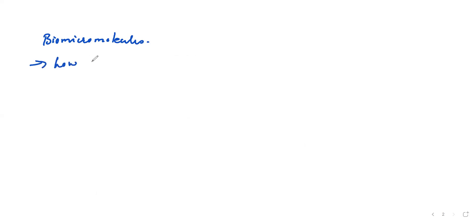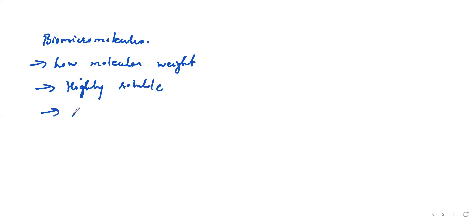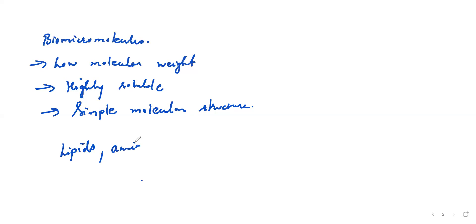In the name itself, it's micromolecules. Hence, their first characteristic will be low molecular weight. Because they are low molecular weight, they will be easily soluble — so they are highly soluble — and they will have a simple molecular structure. These particular biomicromolecules will include lipids, amino acids, nucleotides, and sugars. These all come under micromolecules.